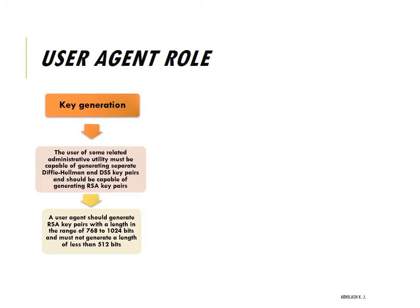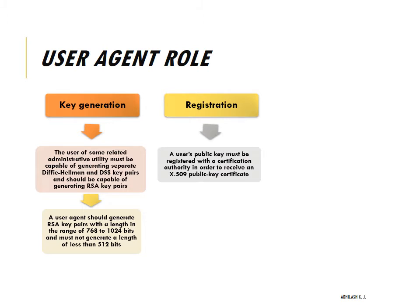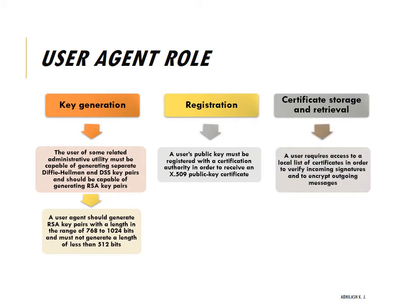The user agent must not generate a key length less than 512 bits. The second function is registration, where the user's public key must be registered with the certification authority in order to receive an X.509 public key certificate. The third function is certificate storage and retrieval. The user may require access to a local list of certificates to verify incoming signatures or encrypt outgoing messages, maintained by the user or local administrative entity on behalf of multiple users.